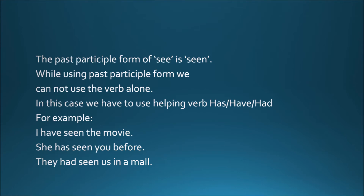While using the past participle form, we cannot use the verb alone. Remember always that when we use the past form of a verb, there is no need of a helping verb, because the past form of the verb is always independent. We can use those verbs in a sentence without the use of a helping verb. But when we use the past participle form in a sentence, we cannot use the verb alone.